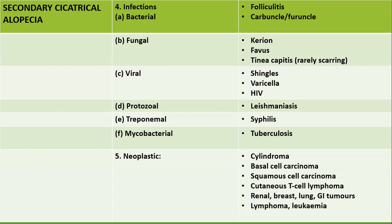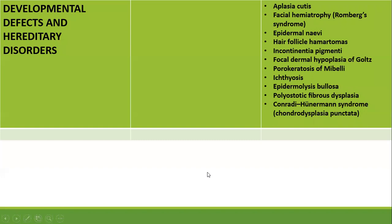Neoplasias also rarely cause secondary cicatricial alopecia, including basal cell carcinoma, squamous cell carcinoma, cutaneous T-cell lymphomas, secondaries, lymphoma, leukemias, and cylindromas. Developmental defects and congenital disorders leading to cicatricial alopecia include aplasia cutis, Romberg syndrome (facial hemiatrophy), verrucous epidermal nevi, hair follicle hamartomas, incontinentia pigmenti, focal dermal hypoplasia of Goltz, porokeratosis of Mibelli, various forms of ectasia, epidermolysis bullosa, polyostotic fibrous dysplasia, and Conradi-Hünermann syndrome or chondrodysplasia punctata.